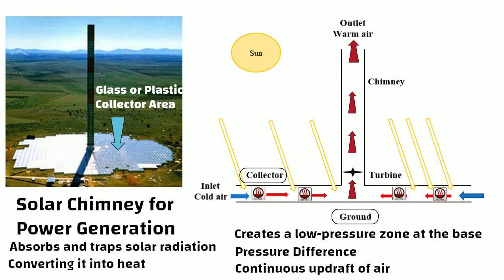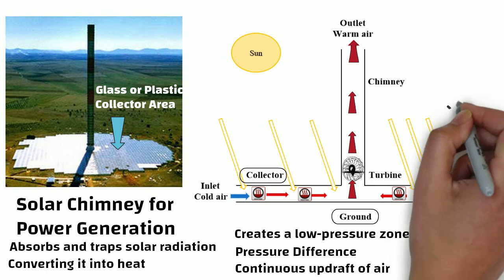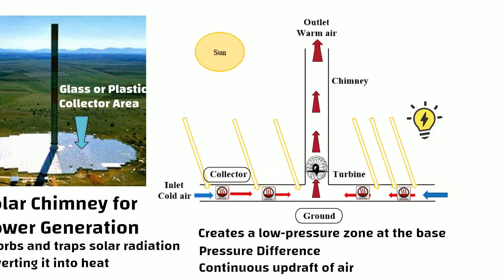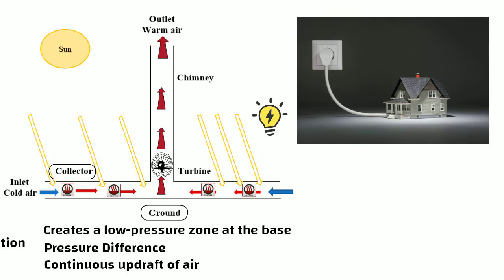For power generation, turbines can be placed at the base of the chimney. As the hot air passes the turbines, the turbines start spinning around and it creates electricity. We can use this electricity to light up our homes.